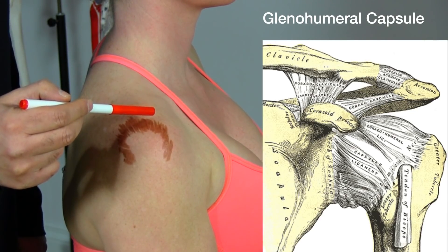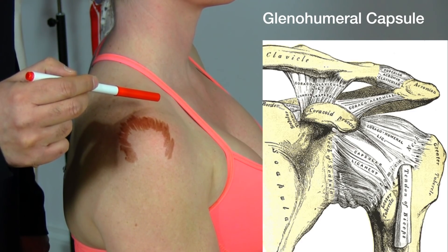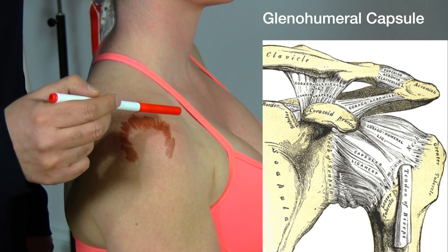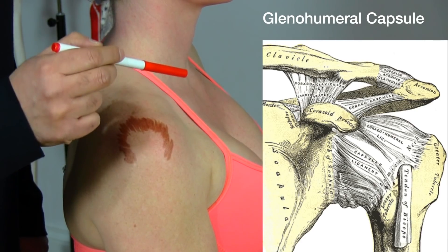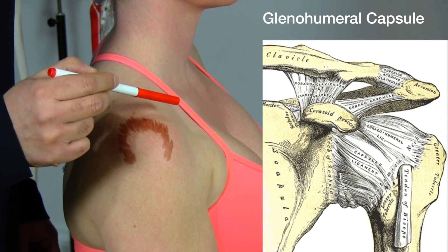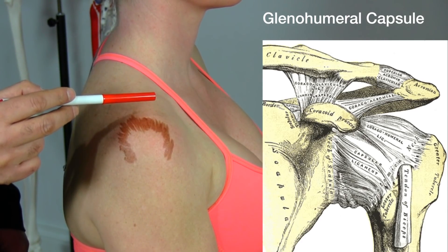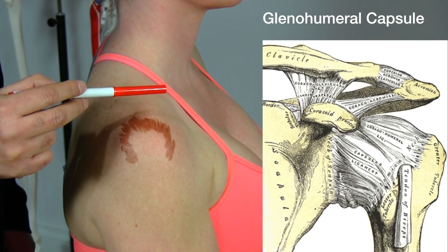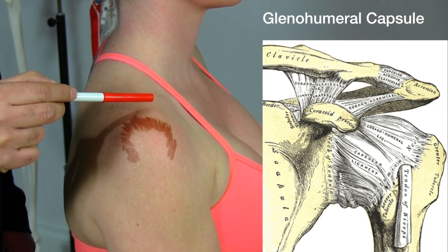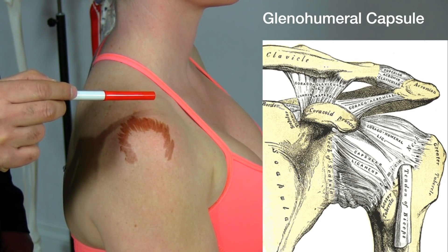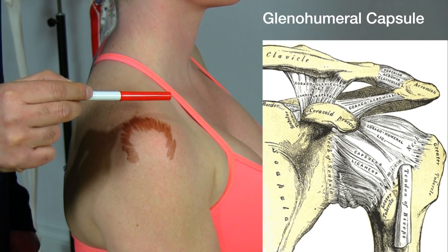The coracohumeral ligament is the strongest ligament of the joint. In the front we have the glenohumeral ligaments which run from the border of the glenoid cavity to the anatomical neck of the humerus — this consists of three bundles: a superior, middle, and inferior section. There are weak areas between these ligaments. The coracoacromial ligament stretches across the scapula and attaches to the acromion and the coracoid process. This ligament protects the tendon of the supraspinatus; however, if the humerus is lifted too much, this ligament can rub up against the tendon and can cause it to wear out.